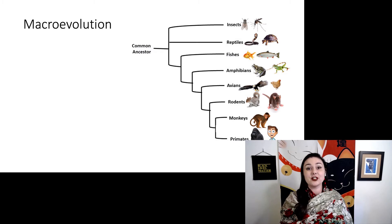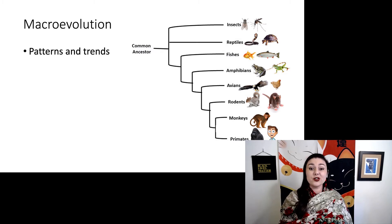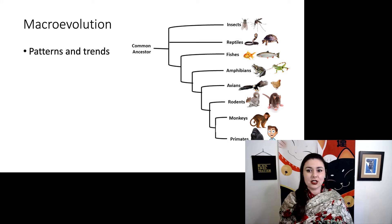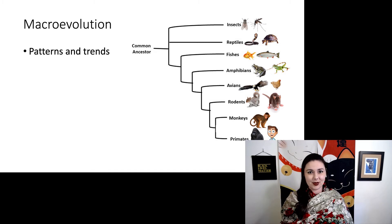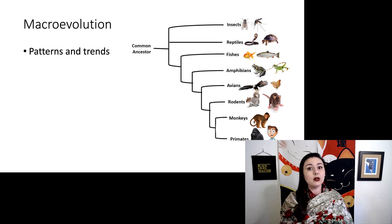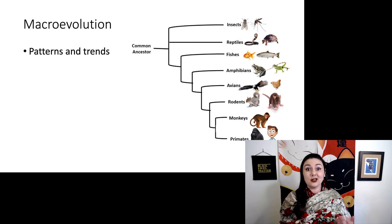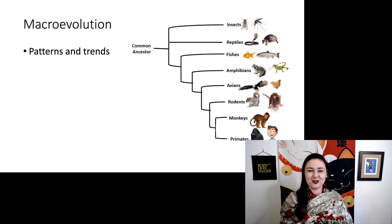Macroevolution is very different — we have different types of data. First, now we're looking at patterns and trends. You might look at all the species that exist today and try to figure out how they're related, like with a phylogenetic tree, and then overlay that with how we think evolution happened. For example, when looking at primates, we see this trend of overall larger brains, suggesting something was driving the evolution of intelligence specifically within primates. We think that has to do with social relationships — you need a larger brain to keep track of complex social relationships.